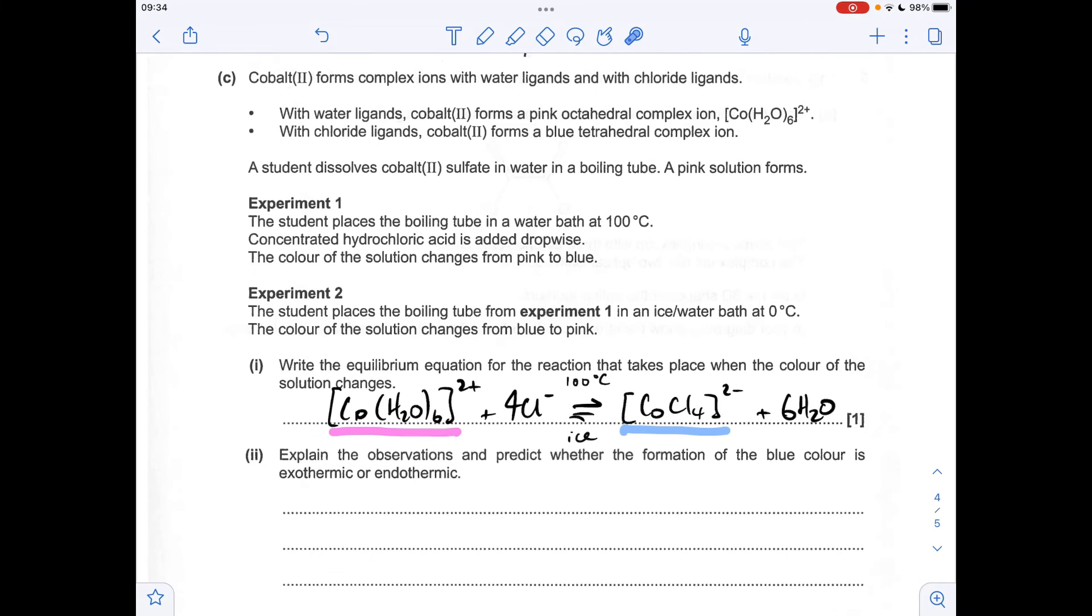So to explain the last part of the question, I've added the other information that we're going to need. So the colour of the species, and this was the first reaction that was carried out to 100 degrees C. It goes from pink to blue, whereas when it was put in an ice bath at zero Celsius, it goes from blue to pink.